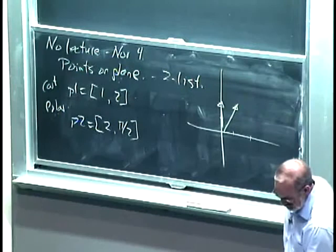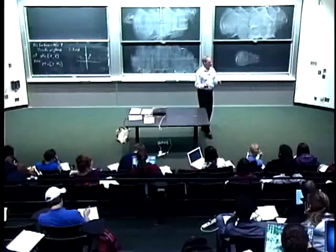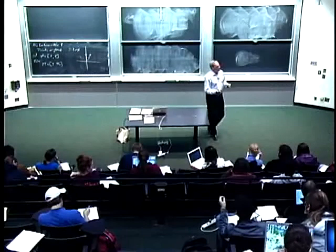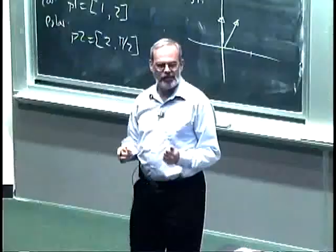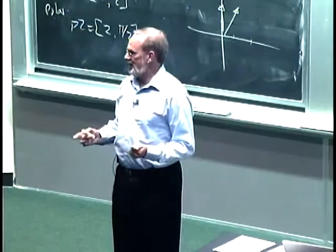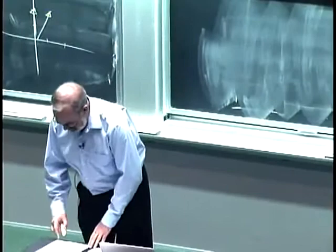But here's the problem. I've glued things together by just using a list. If I hand you one of these lists, how do you know which kind it is? How do you know whether it's in Cartesian form or polar form? There's nothing that identifies that. I have no way of saying what this grouping actually means.